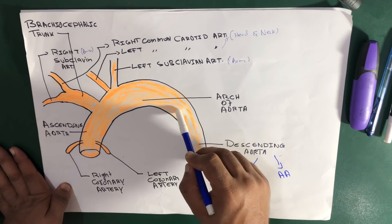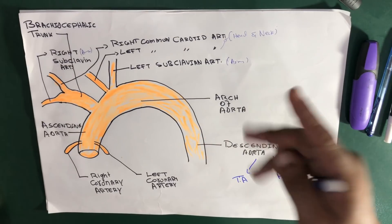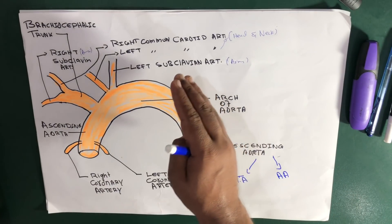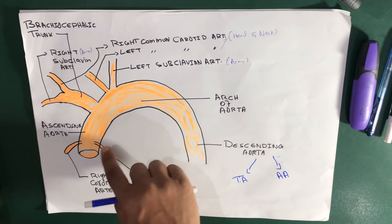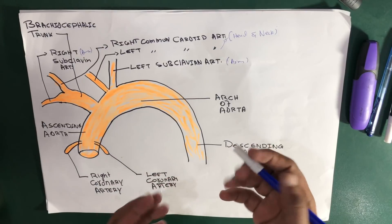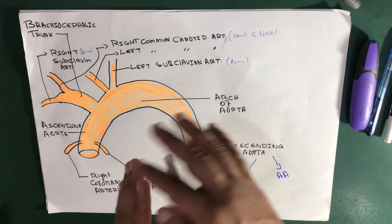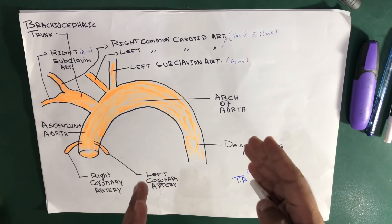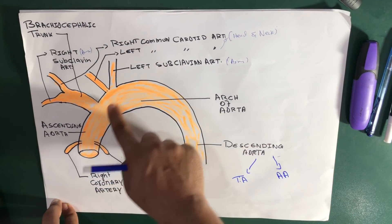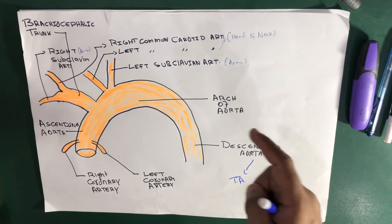The arc of aorta is really important — it has three main branches. Also called the transverse aorta, it is umbrella-shaped over the superior aspect of the heart. It starts off from the ascending aorta and ends at the left subclavian artery.